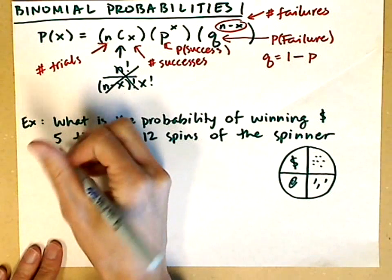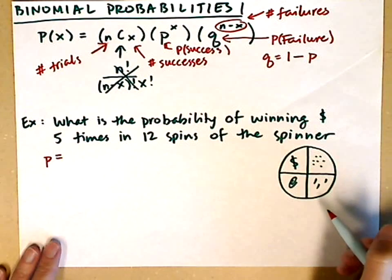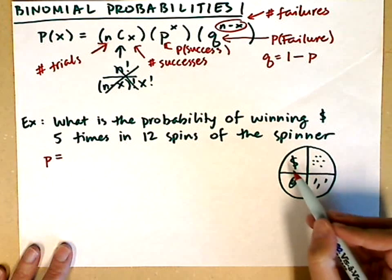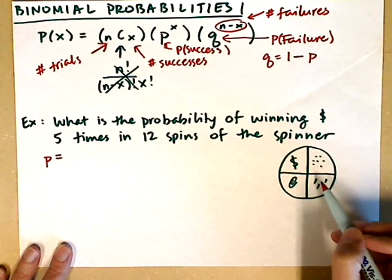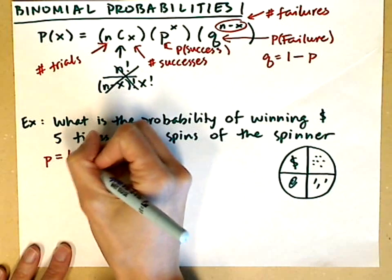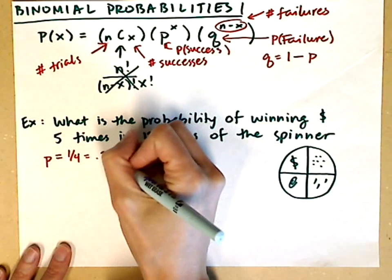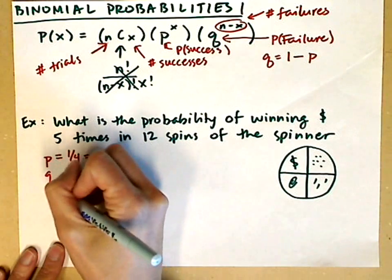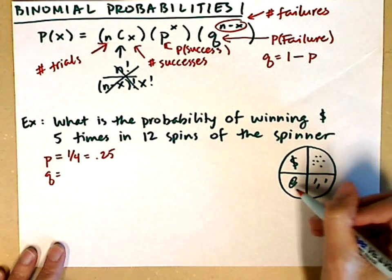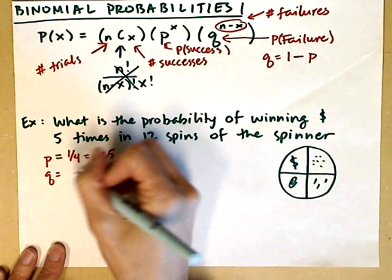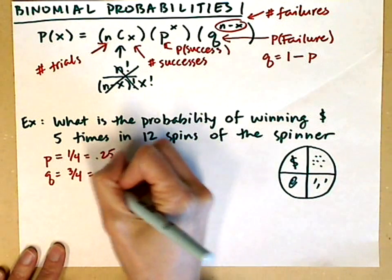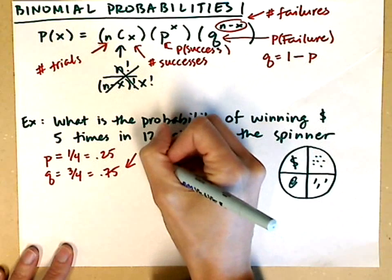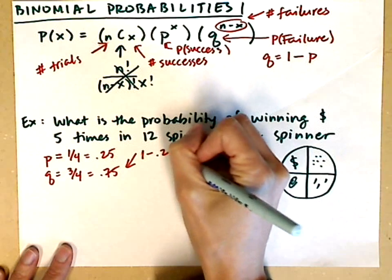The probability of a success in one spin: money covers 25% of the area, or one out of four spaces. So the probability of a success is 1/4, which you could express as 0.25. The probability of a failure is everything else — that's 3 out of 4, or 0.75. Notice that 0.75 is just 1 minus 0.25.